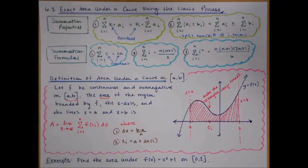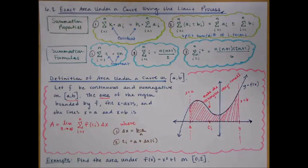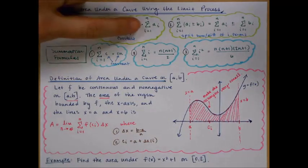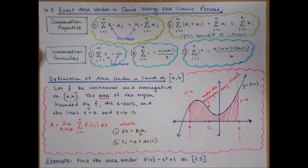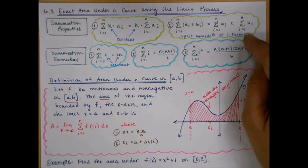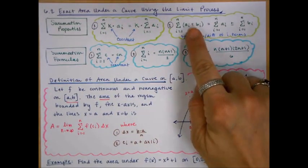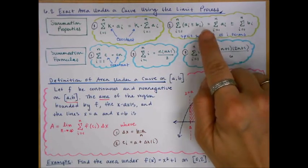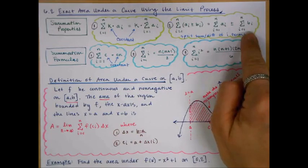I'm starting you off with a lot of things you'll need in this unit. The summation properties — there are two of them. The first one says to take out a constant from each sum, so you're only left with the i term. The second property tells you that you can split up your i terms, whether it's sum or difference, into two separate sums.